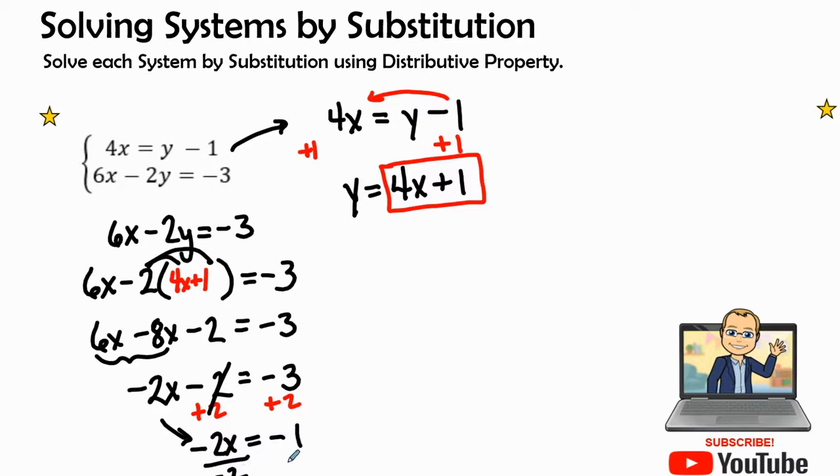When I divide by a negative 2 on both sides I'm going to move my answer up here. I will have x equals, and a negative and a negative equals a positive, so I'm going to have a positive 1 half. There is my x value in my solution and I'm going to go box to box.